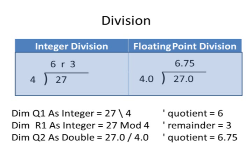So, 27 divided by 4 gives us a quotient of 6 and a remainder of 3.